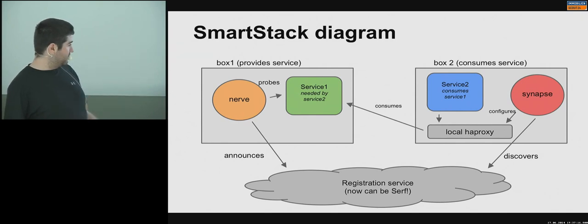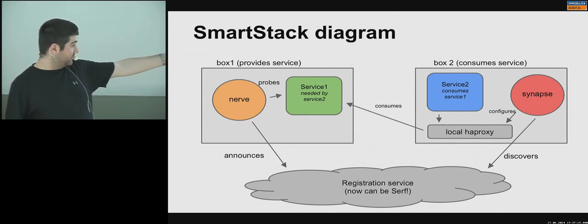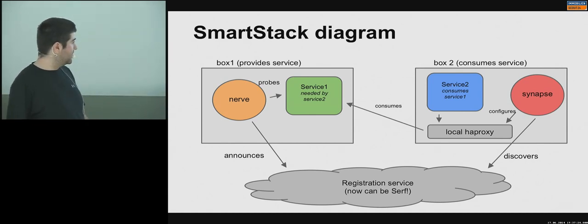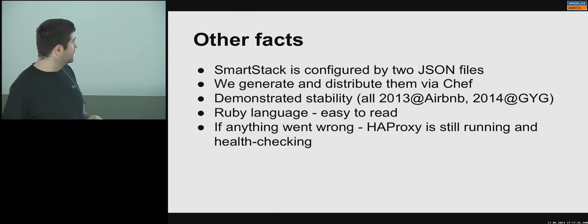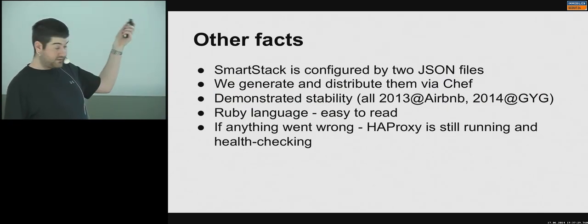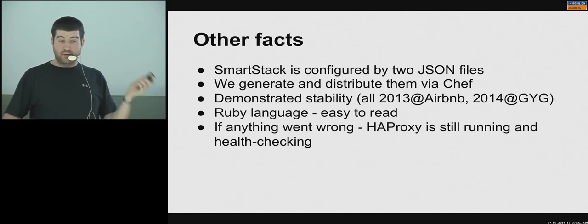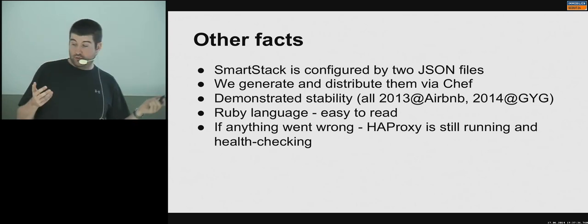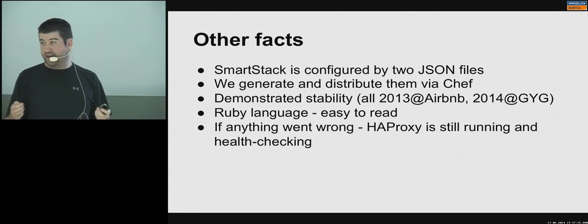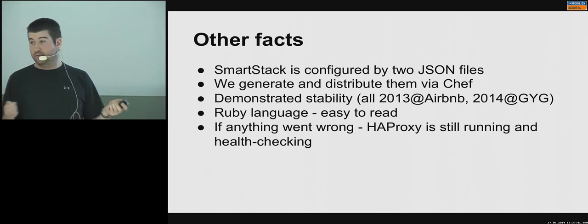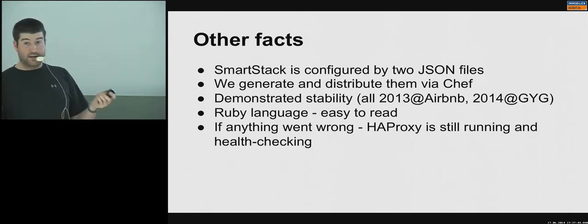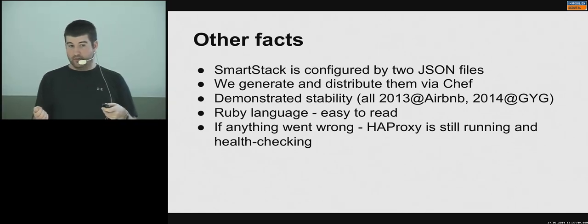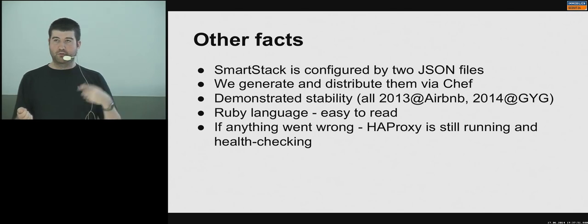What changed is just the registration service is now Serf — no centralized component. The configuration is just two JSON files, one for Nerve and one for Synapse, distributed through Chef. It's completely open source, and it's stable — it's been used all through 2013 at Airbnb.